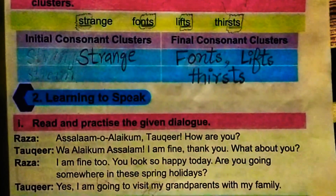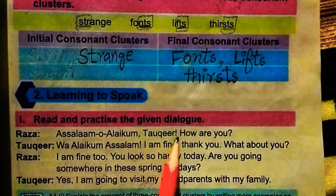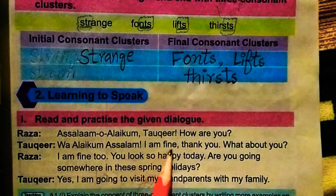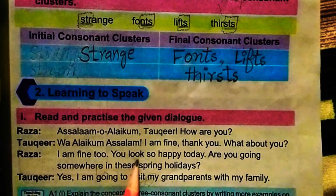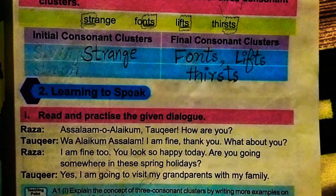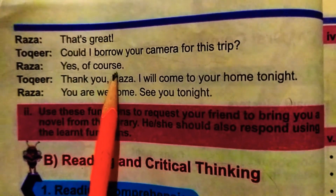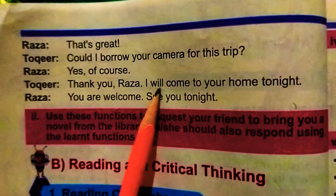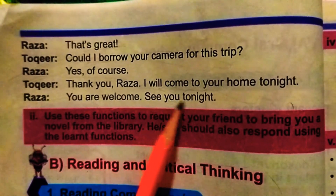Next is Learning to Speak — reading a dialogue. Raza: Assalamu Alaikum, Takeer. How are you? Takeer: Walaikum Assalam. I am fine, thank you. What about you? Raza: I am fine too. You look so happy today. Are you going somewhere in these spring holidays? Takeer: Yes, I am going to visit my grandparents with my family. Raza: That's great. Takeer: Could I borrow your camera for this trip? Raza: Yes, of course. Takeer: Thank you. Raza: I will come to your home tonight. You are welcome. See you tonight.